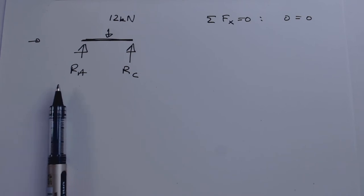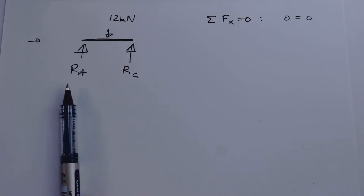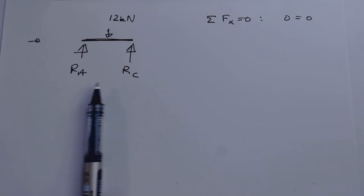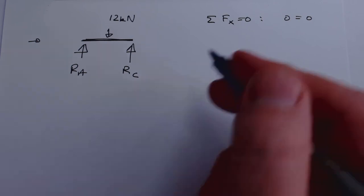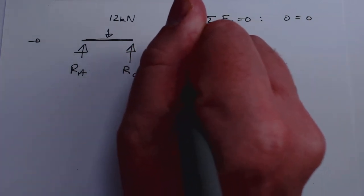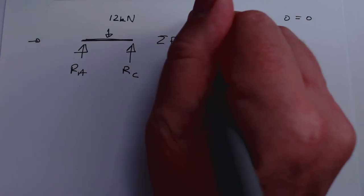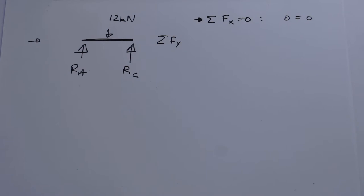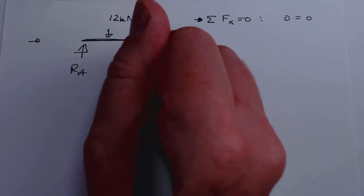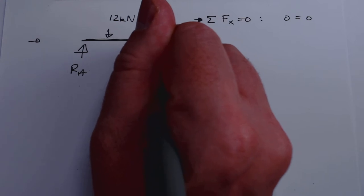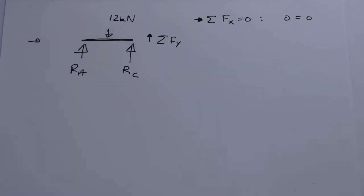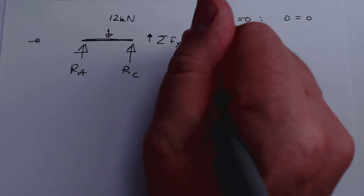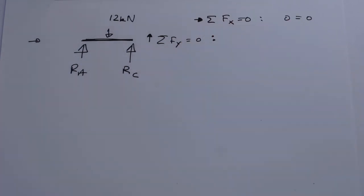Now let's repeat this for the forces in the y-direction. A good approach is to skim through your beam from left to right and add up your forces as you go. I should note which way I've decided to take as positive for my force — that's going to be upward in the y-direction.